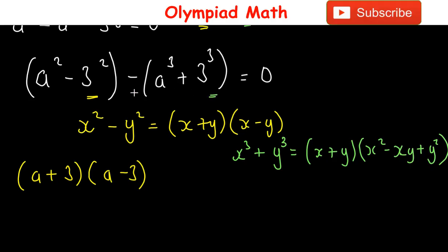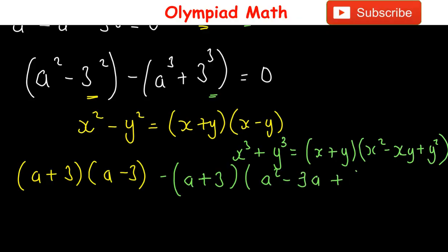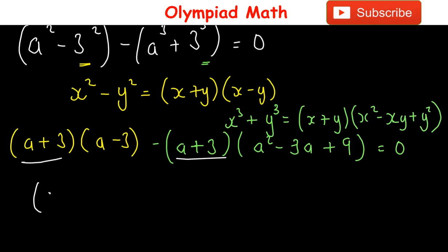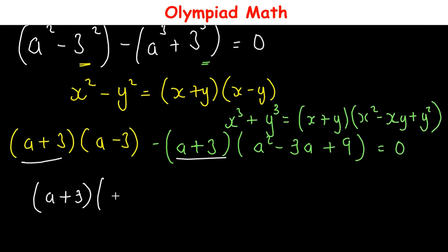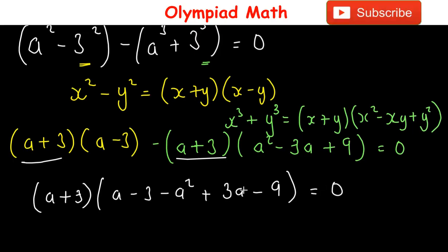Applying the sum of cubes formula, this becomes minus (a+3)(a² - 3a + 9) = 0. So we have (a+3)(a-3) minus (a+3)(a² - 3a + 9) = 0. Factoring out (a+3), we are left with (a+3)[(a-3) - (a² - 3a + 9)] = 0.